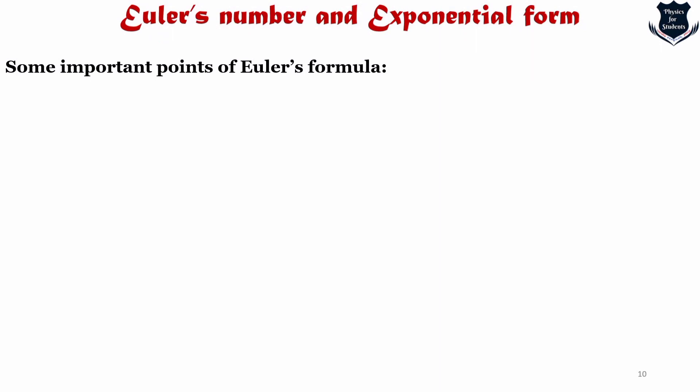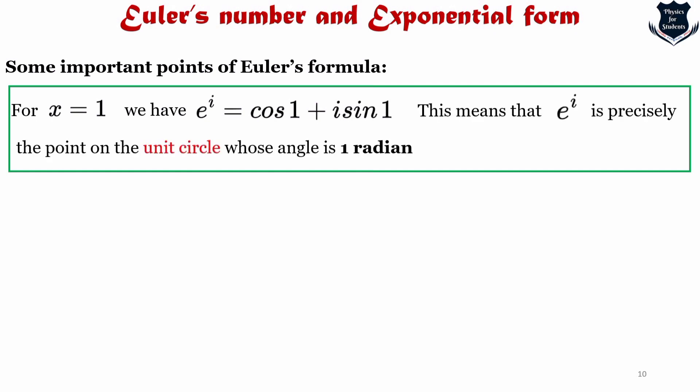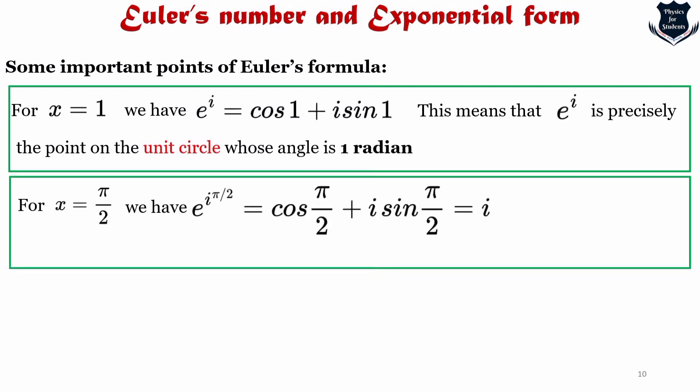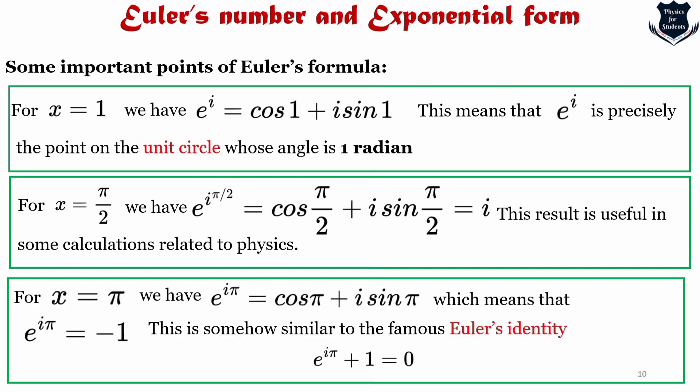Looking at some properties of Euler's formula: if x equals 1, then e^i = cos(1) + i·sin(1), and e^i is precisely the point on the unit circle at 1 radian. If x equals π/2, then e^(iπ/2) = cos(π/2) + i·sin(π/2) = i. This result is used in many areas of physics, especially quantum mechanics. And finally, the beauty lies in x equals π — this gives us Euler's identity, which is one of the most beautiful and graceful formulas that mankind has ever produced.